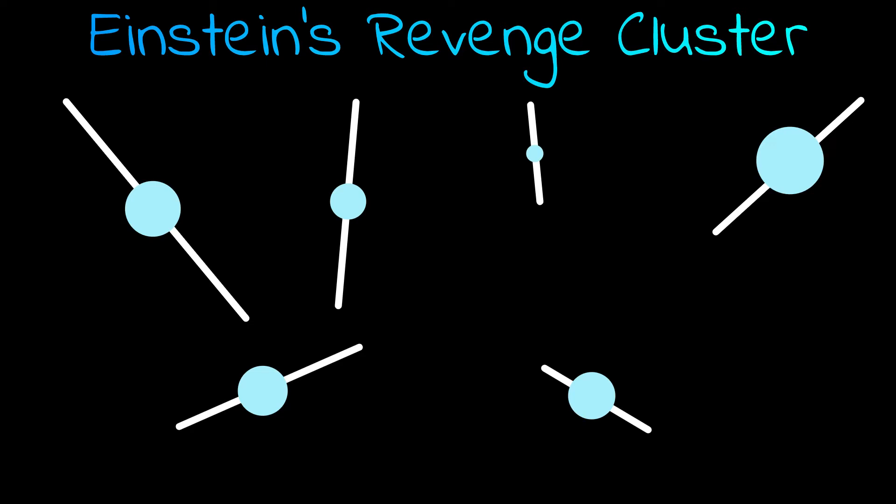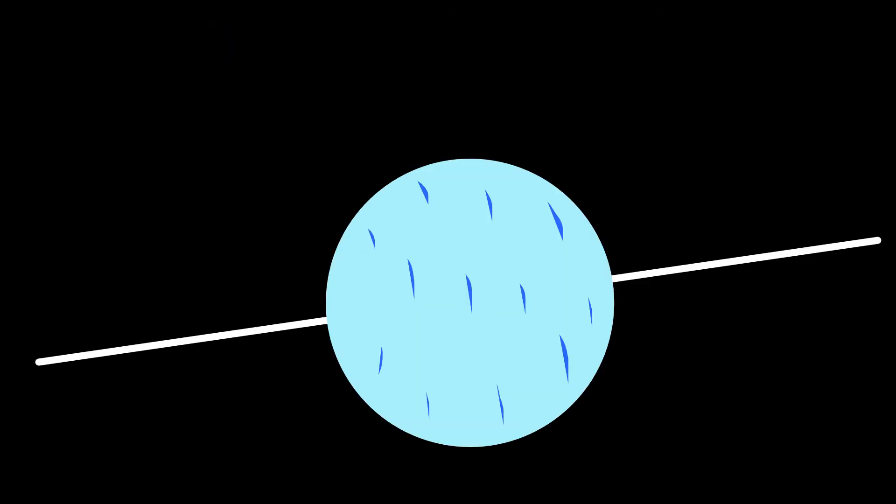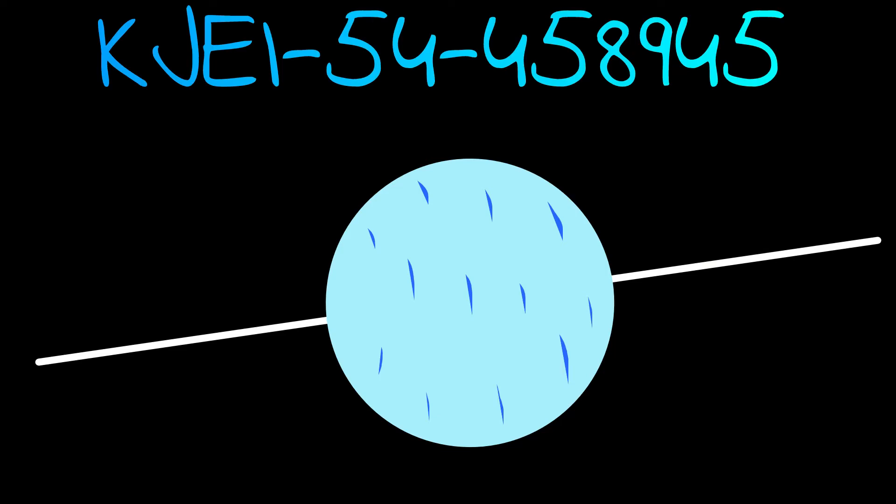Now, to find what we are looking for, we must go deep inside of these neutron stars. Let's pick this one. This neutron star is called KJEI54458945.